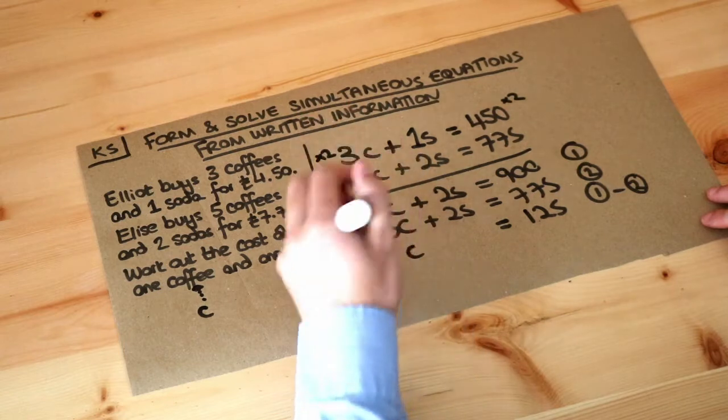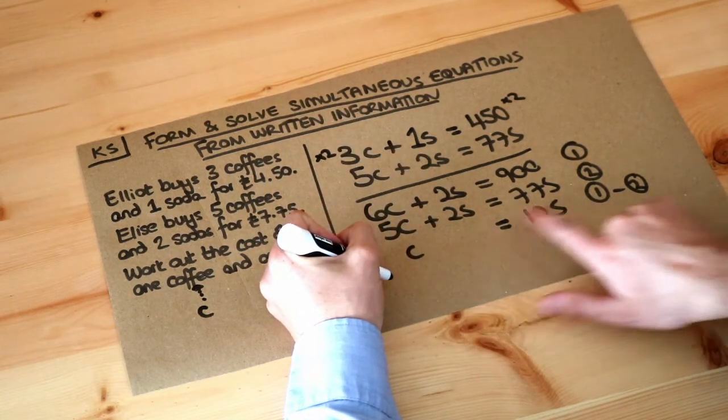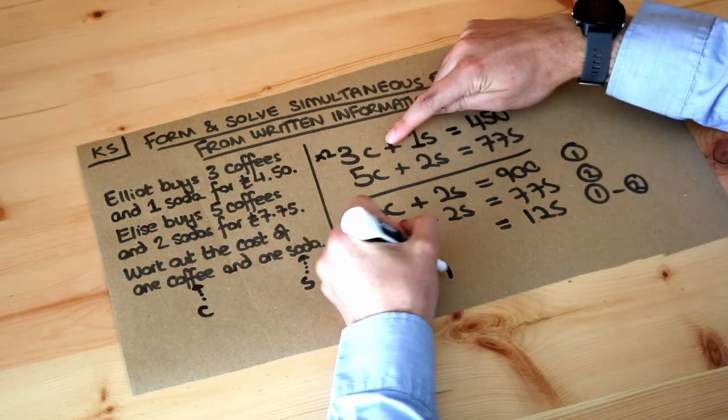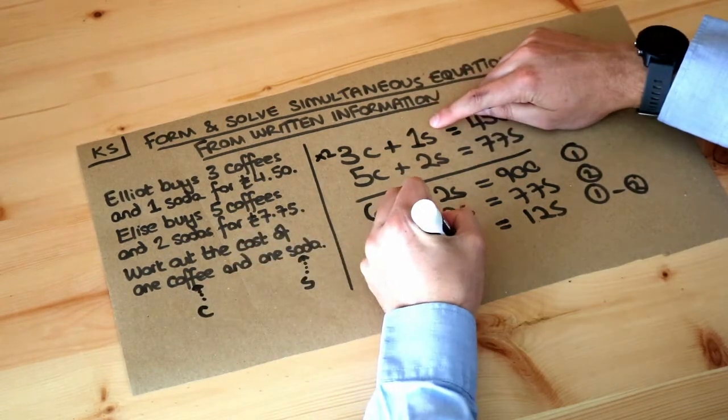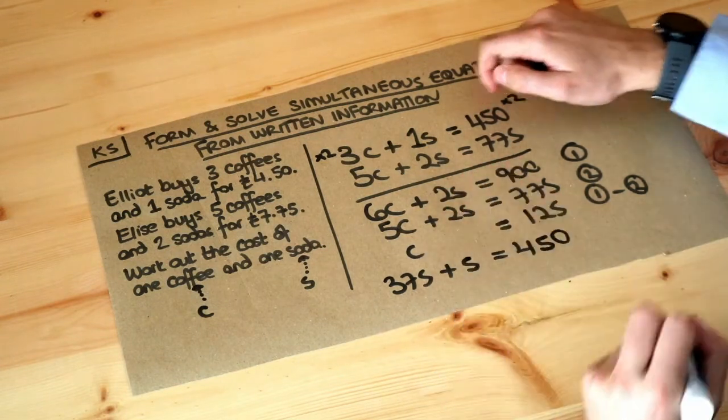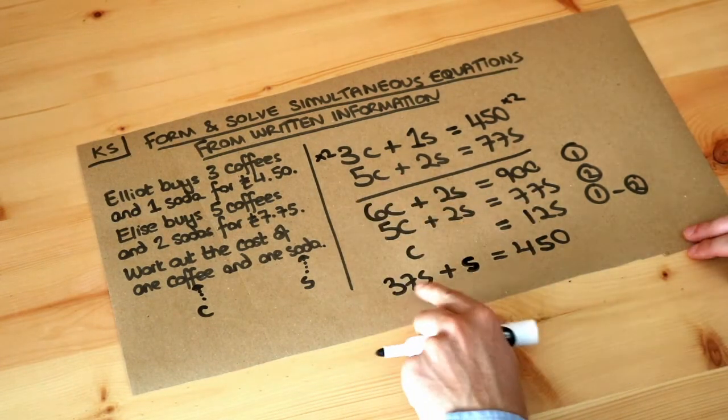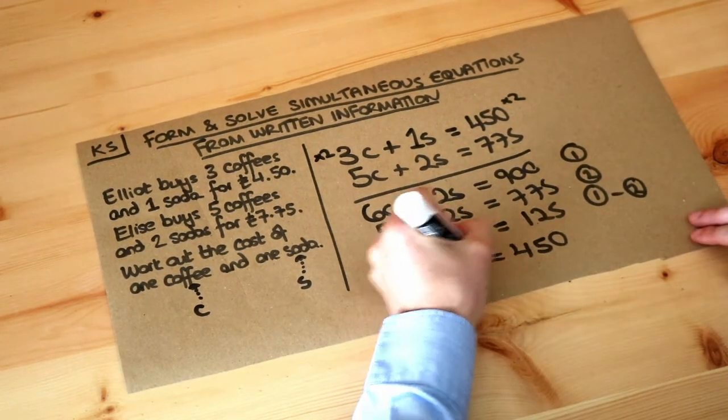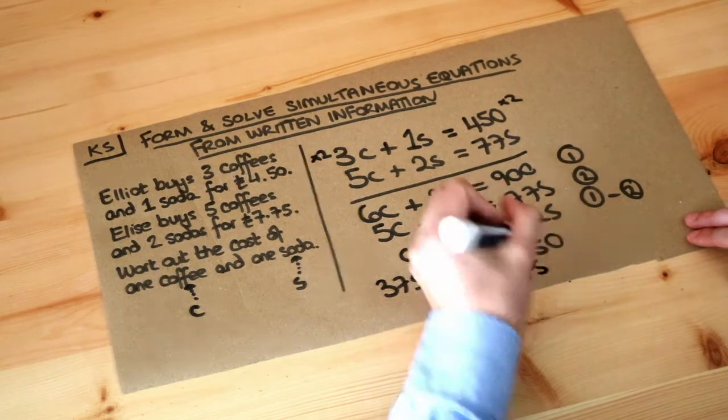We have 3c, so 3 times 125, which is 375, plus s equals 450 pence. 375 plus what is 450? It's 75, so one soda costs 75 pence.